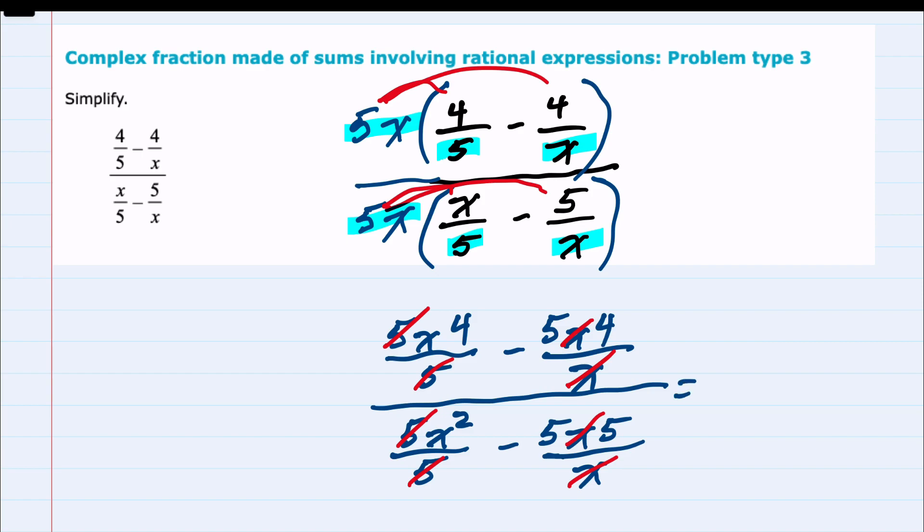So simplifying here we have x times 4 or 4x minus 5 times 4 so minus 20 over an x squared minus 5 times 5 so a minus 25.